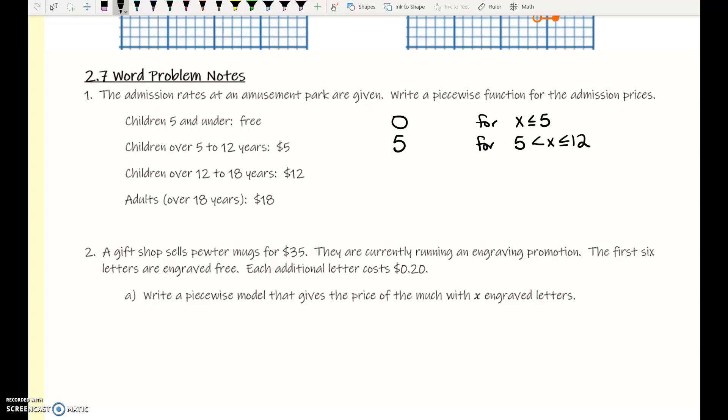5 is included in this top one. So we can't include 5 in multiple places. So this one has to be 5 is less than x. x can't equal 5 in that second piece. So it's over 5, not including 5, and up to 12 years old. So 5 is not included, 12 is included.